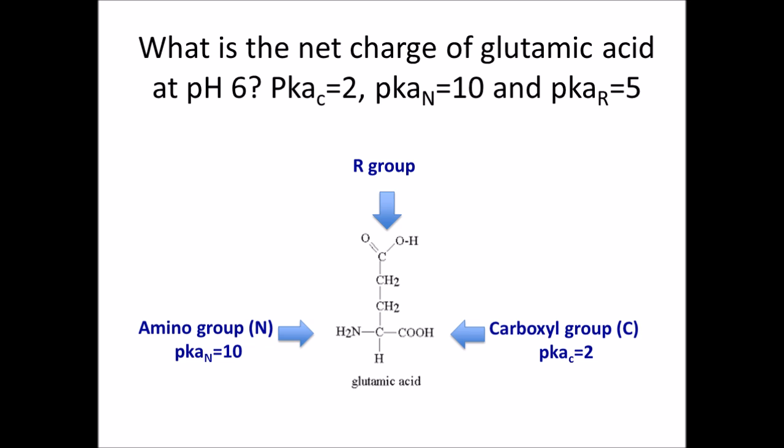In class, you learn that the pKa of the carboxyl group is 2, and the pKa of the amino group is 10, and this will always be fixed for every amino acid. For glutamic acid, they'll give you the R group, so the R group pKa is 5. Below, I've shown the structure, which you don't actually need to calculate the net charge, but it is nice to see what the structure is and what group will be protonated and deprotonated.